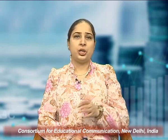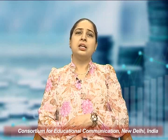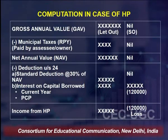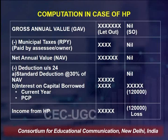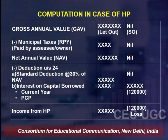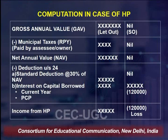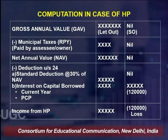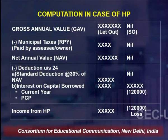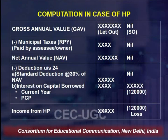When we talk about house property computation, the format is: start with gross annual value, minus municipal taxes to get NAV, then deductions under Section 24 — which includes 24(a): standard deduction at 30% flat, and 24(b): interest on capital borrowed, covering both current year and pre-construction period. For self-occupied property, the upper ceiling is ₹2 lakh. For self-occupied, GAV would be nil, NAV will be nil, and standard deduction will also be nil.